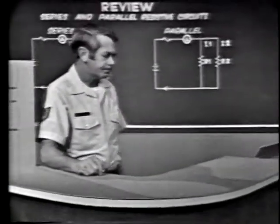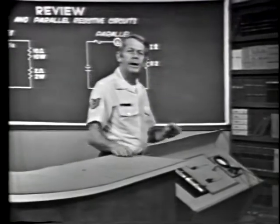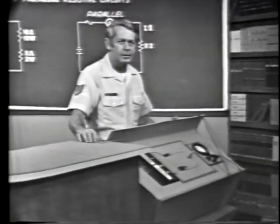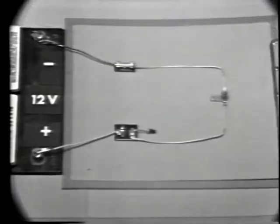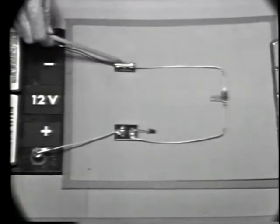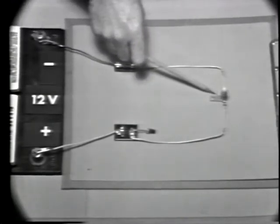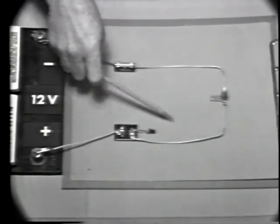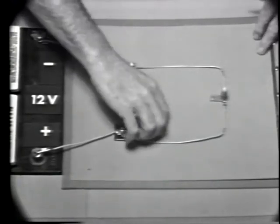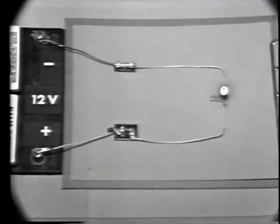To begin, let's establish the requirements for any practical electronic circuit. A circuit should contain a power source, fuse, switch, and a current limiting device. These components are connected with conductors, and when the switch is closed, current flows and the circuit performs work.